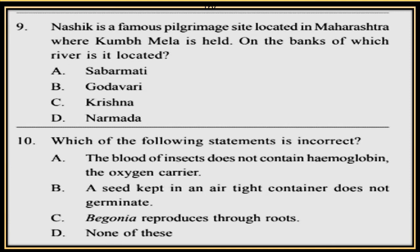Question 10. Which of the following statements is incorrect? A. The blood of insects does not contain hemoglobin, the oxygen carrier. B. A seed capped in an airtight container does not germinate. C. Begonia reproduces through roots. D. None of these.